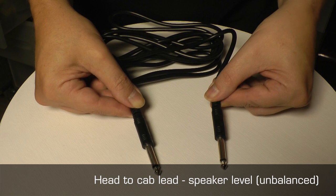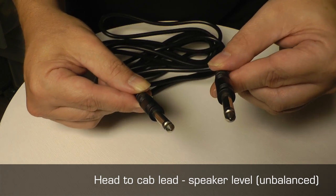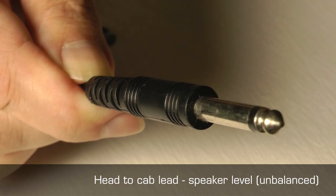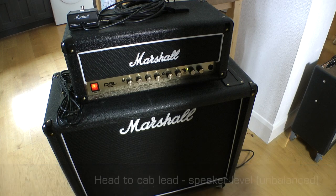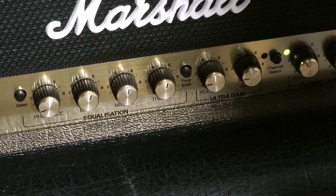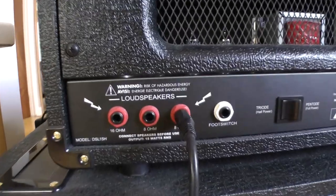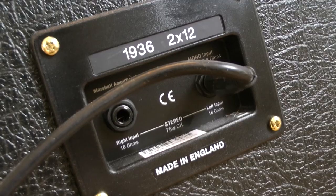This is an amp head-to-cab lead. It carries a speaker-level electrical signal, unbalanced, male-to-male mono quarter-inch jack. It's used for electric guitar and bass stacks, and the cable in it is different to both the jack instrument lead and the guitar instrument lead.